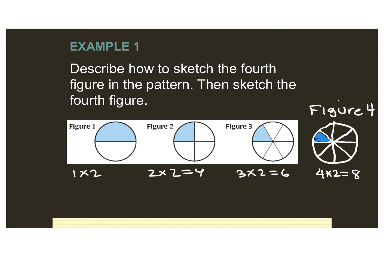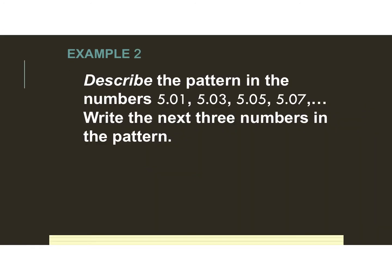Example 2 is a pattern of numbers. If you recall back when you took the entrance exam, they had a section where you had to complete the pattern. When you're looking for the next number in a sequence or pattern, you are using inductive reasoning. So: describe the pattern in the numbers and write the next 3 numbers in the pattern. If our pattern looks like it's increasing, that's a clue we're either adding or multiplying by something. If it decreases, that could mean we're subtracting or dividing.